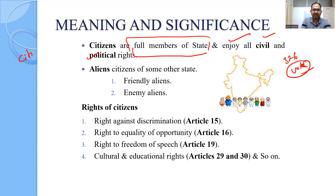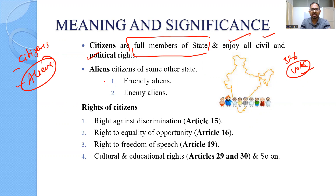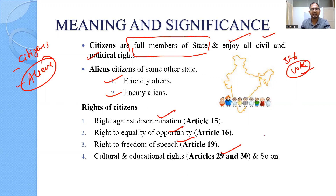There are two types of people residing in India. One may be citizens and another may be aliens. Aliens are those who are not full members of the Indian state — they are members of any other state. There are friendly aliens and enemy aliens. Friendly aliens are those who are citizens of countries having friendly relations with India. Enemy aliens are citizens of countries not having good relations with India. A lot of rights — for example, Articles 15, 16, 19, 20, and 30 — are provided to Indian citizens by the constitution and by the law.